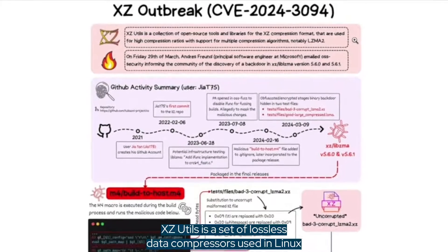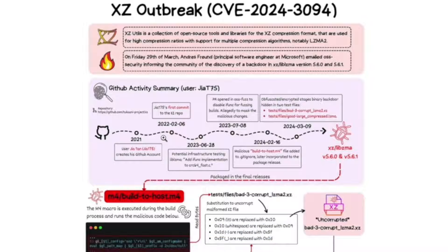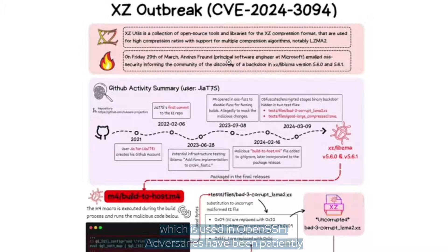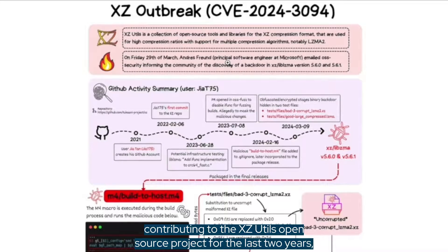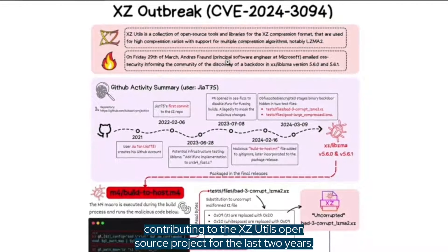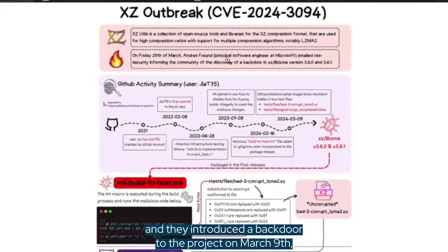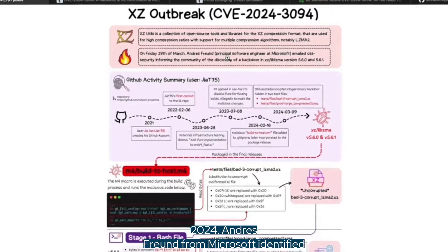XZ-Utils is a set of lossless data compressors used in Linux and Windows operating systems. The vulnerability is found in the lib-lzma component of XZ-Utils, which is used in OpenSSH. Adversaries have been patiently contributing to the XZ-Utils open-source project for the last two years, and they introduced a backdoor to the project on March 9, 2024.